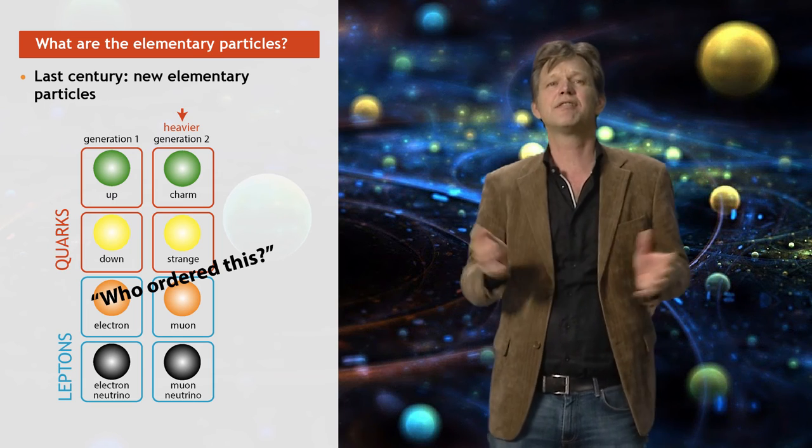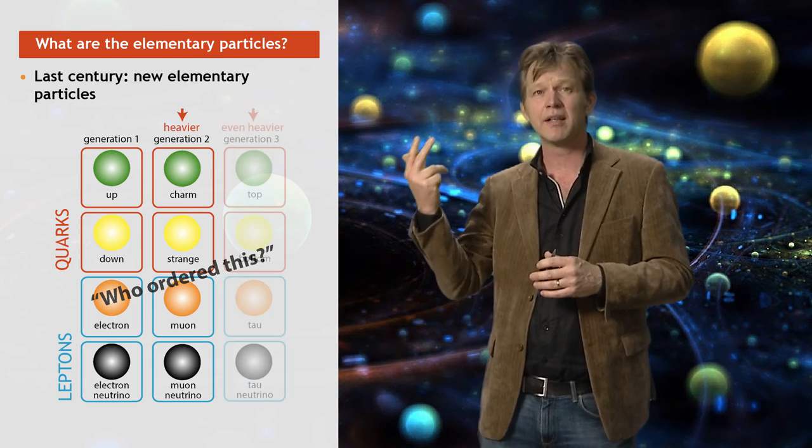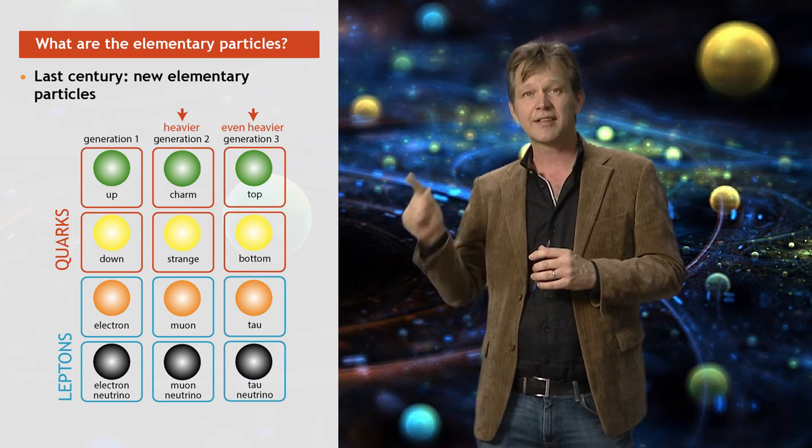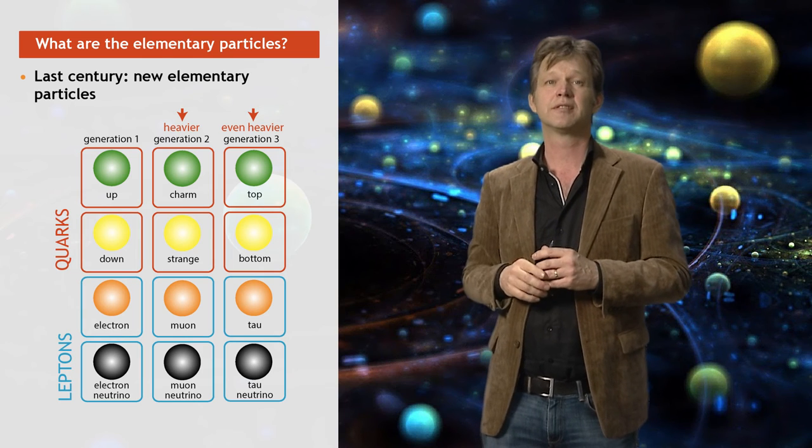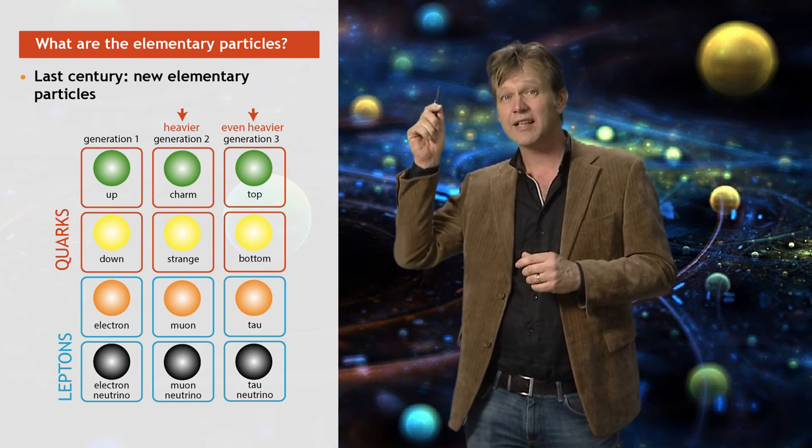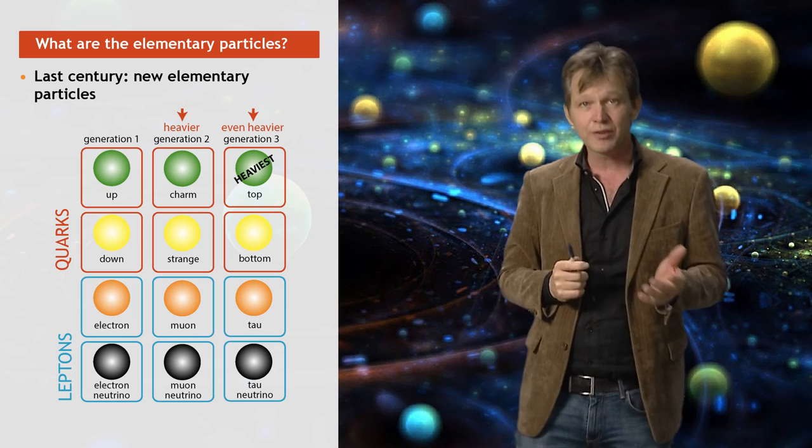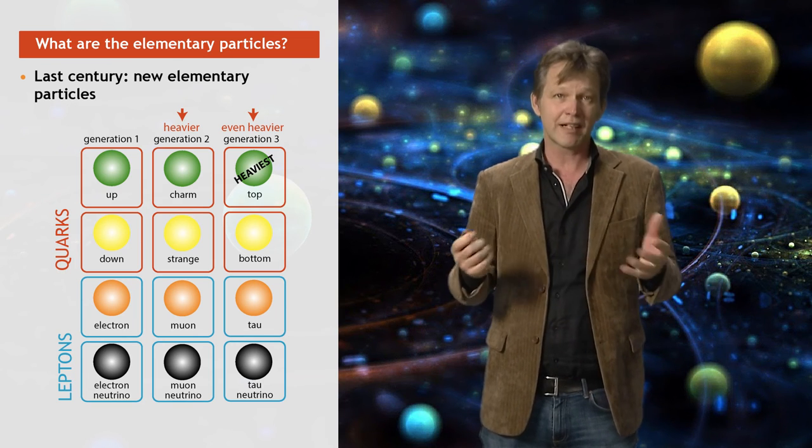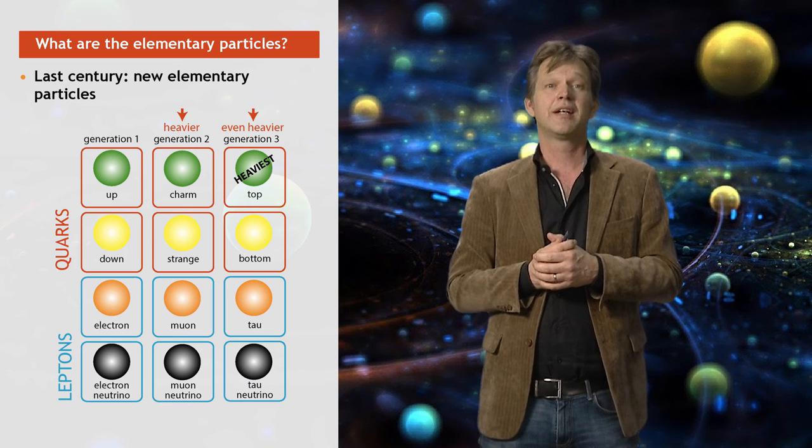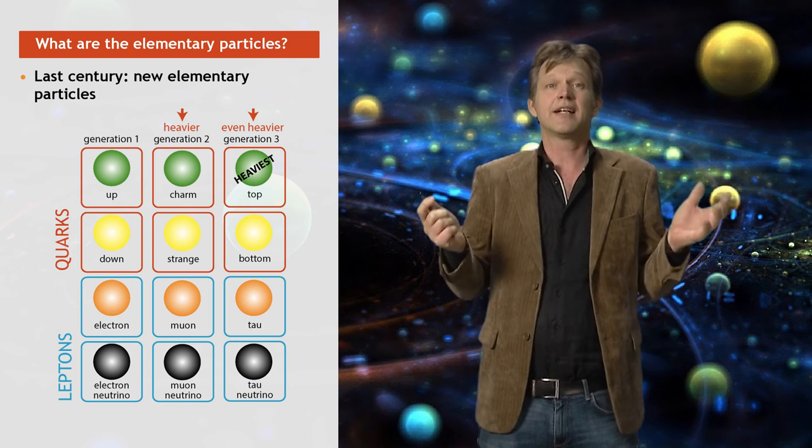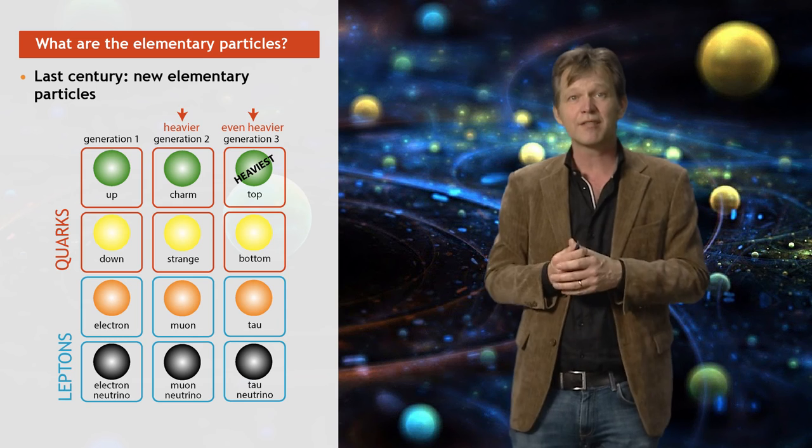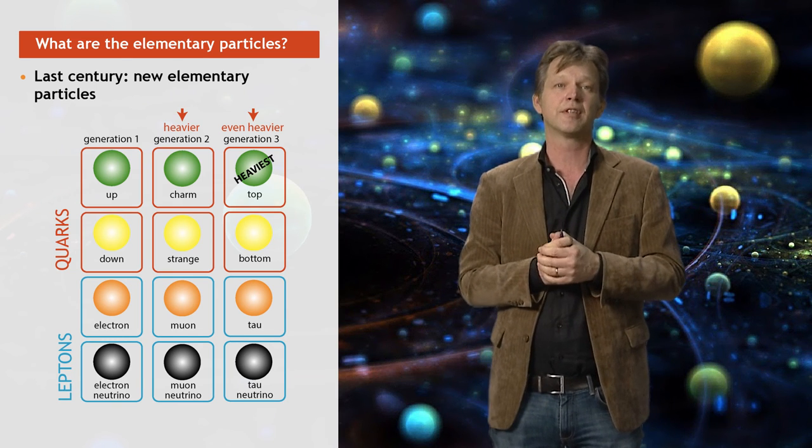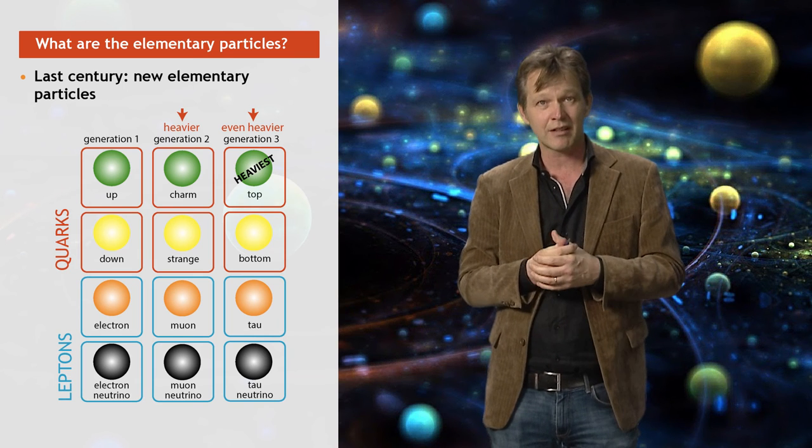The situation is even more obscure by the third family of particles. There you find the top quark, the bottom quark, the tau lepton, and the tau neutrino. The top quark is the heaviest elementary particle as we know today, and it has a mass equivalent to that of 175 protons. Yet it is a point particle without any size. It was discovered in 1995 in a big accelerator of 6.8 km circumference called Tevatron at Fermilab near Chicago.